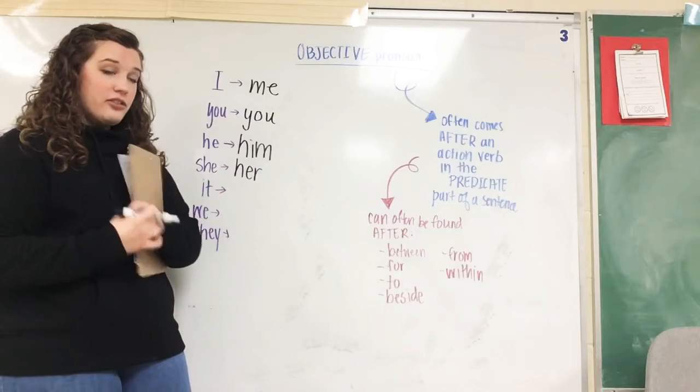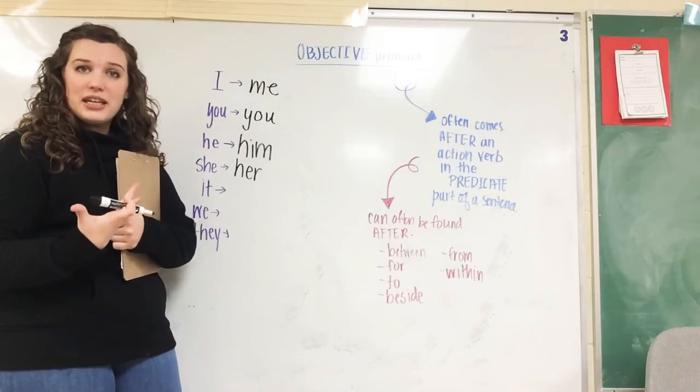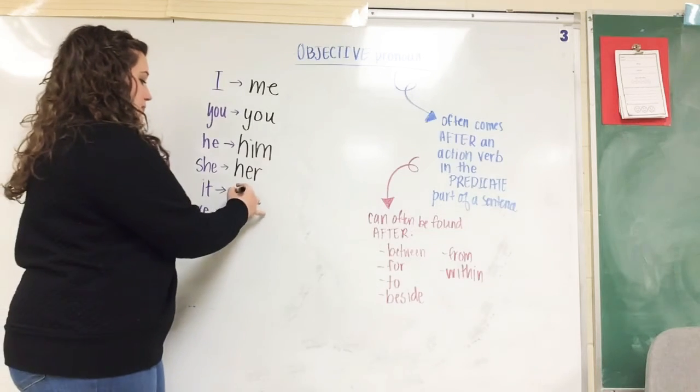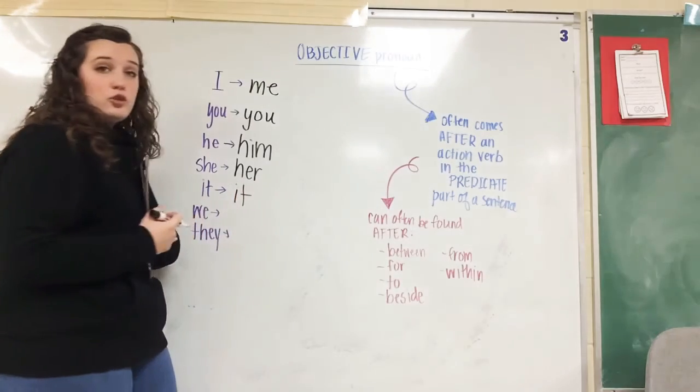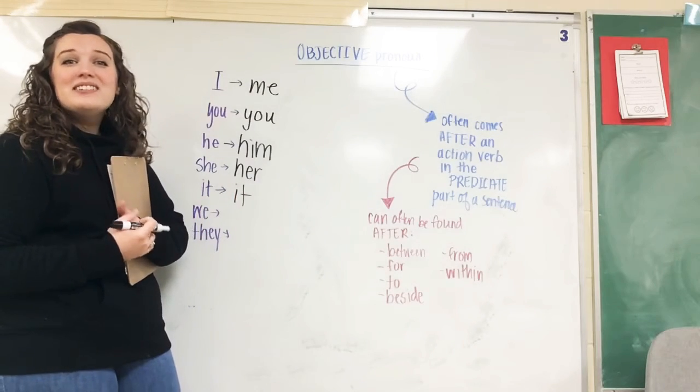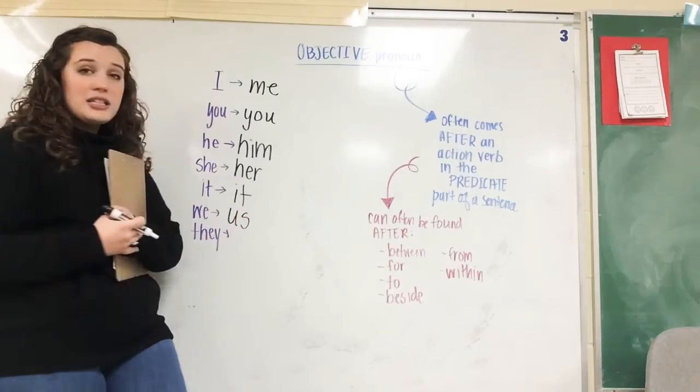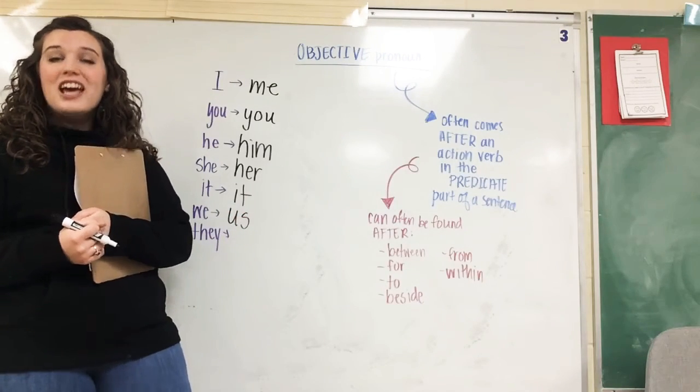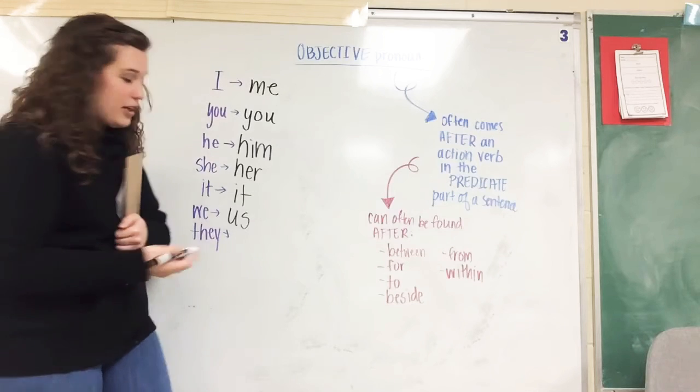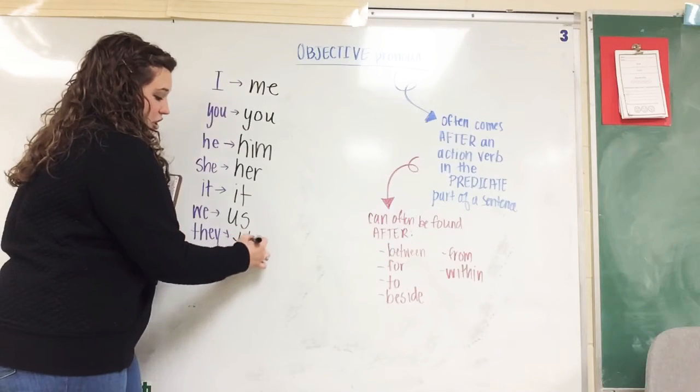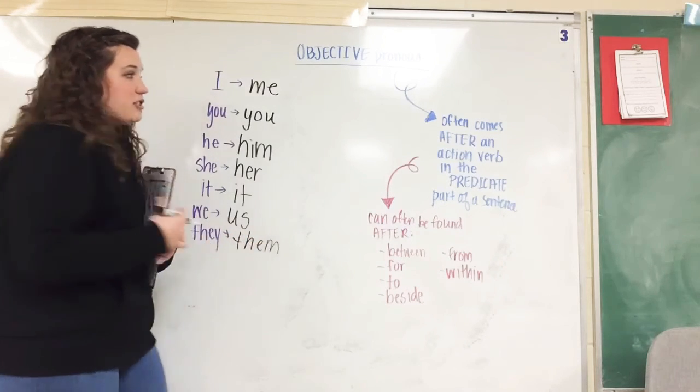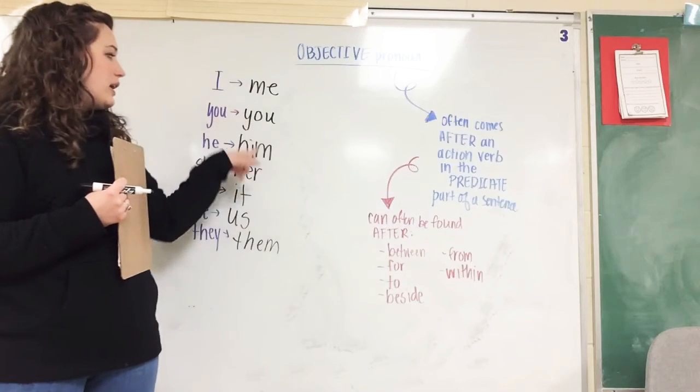Gus called it on the phone. That works just like with you, it stays the same. Gus called we on the phone? Gus called us on the phone. Gus called they on the phone? Gus called them on the phone. Okay, so it's really just changing it. These objective pronouns—me, you, him, her, it, us, them—they're most likely going to come after the action verb. Okay, after the action verb.